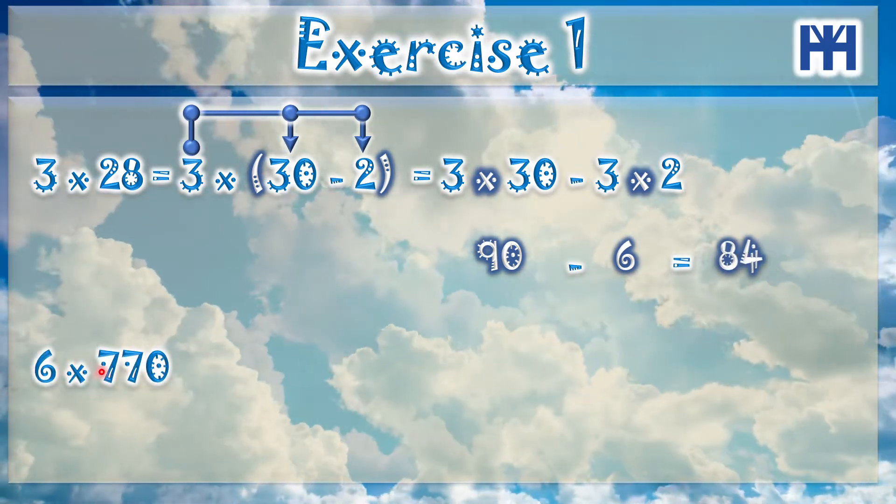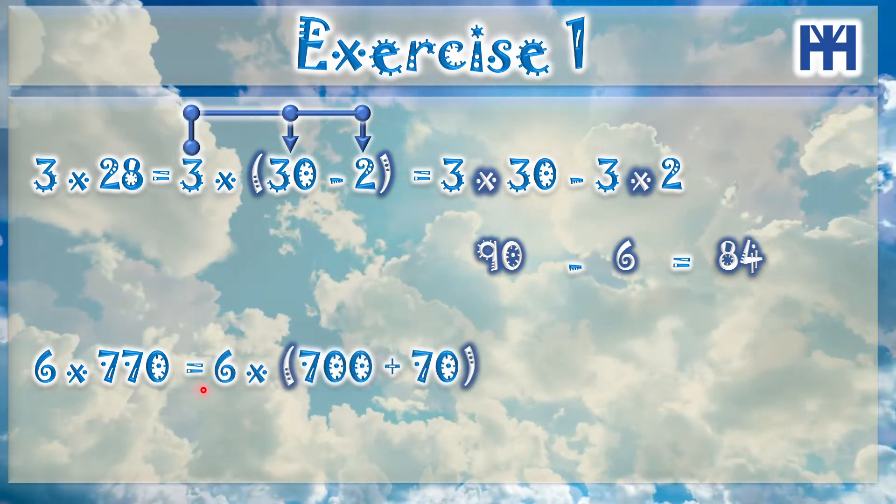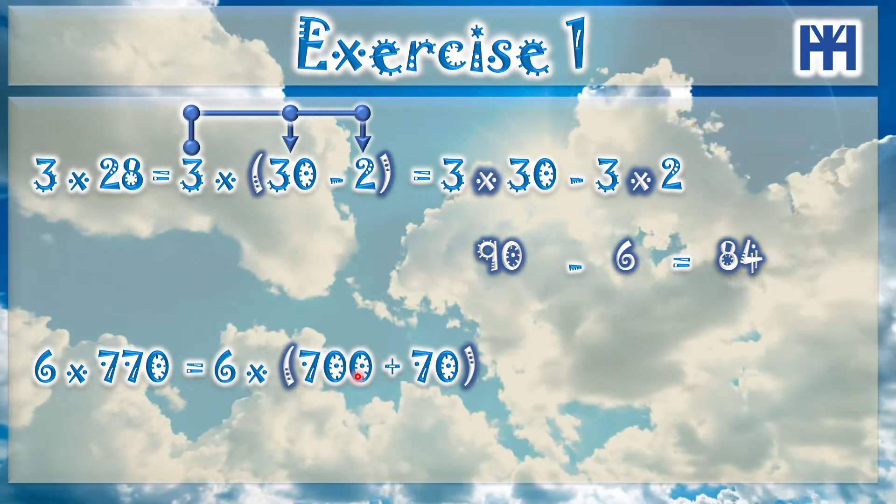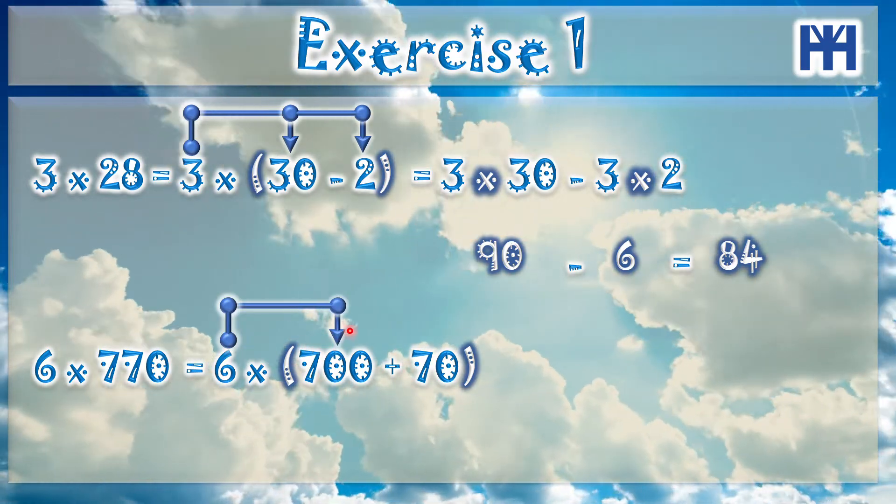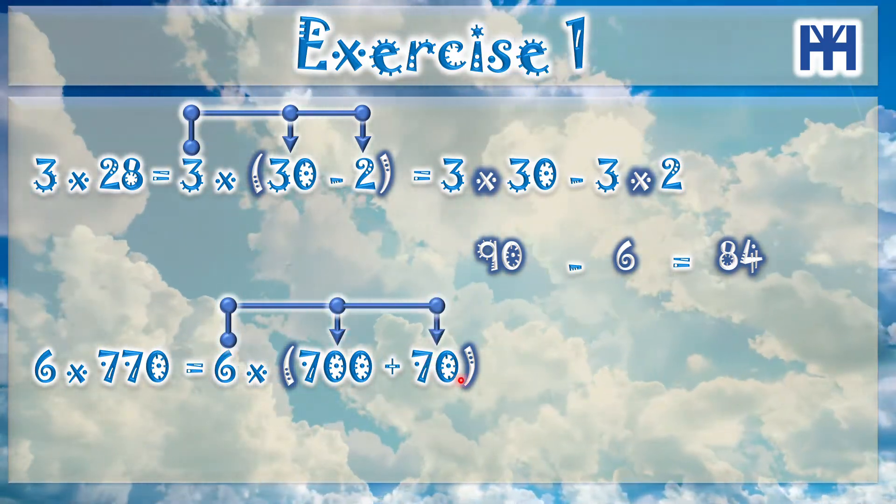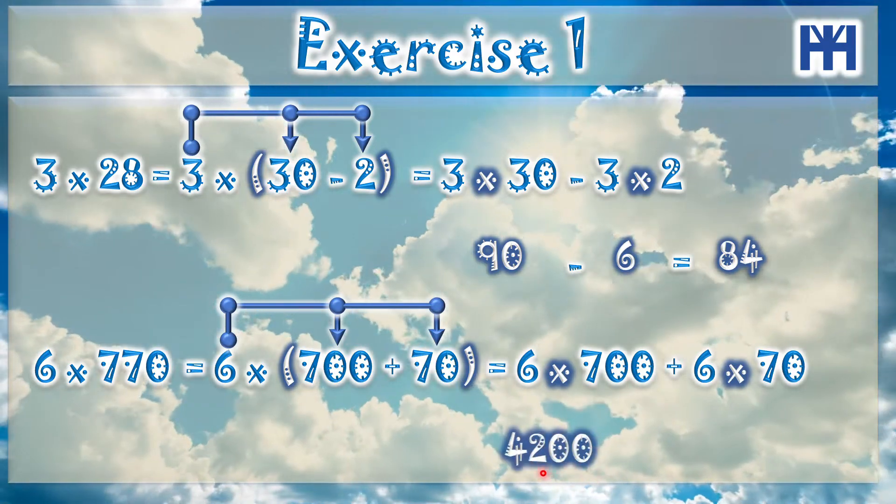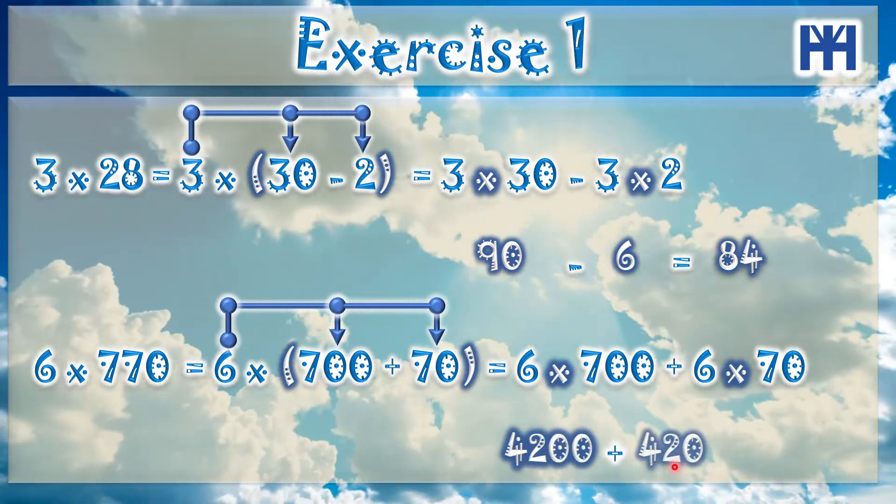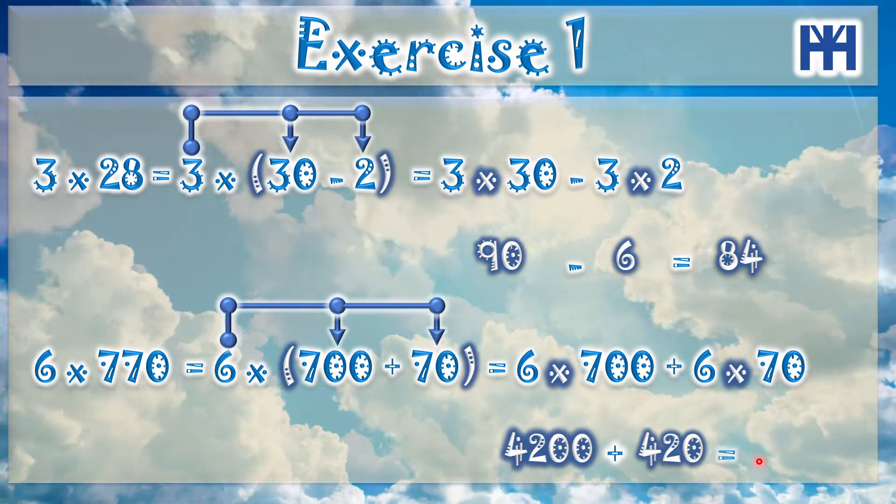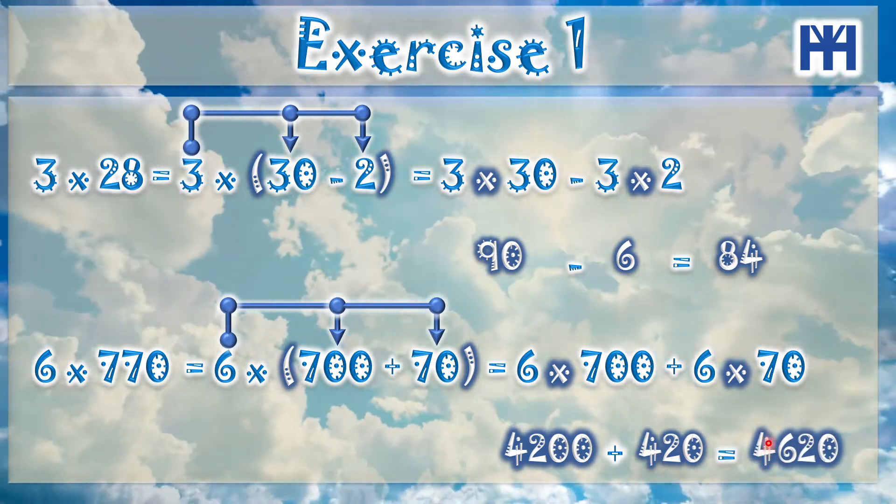6 times 770. So it's the same as 6 multiply 700 plus 70. So it's 6 multiply 700 plus 6 times 70. So 6 times 700 is 4200 plus 6 times 70 is 420. So it will be 4620.